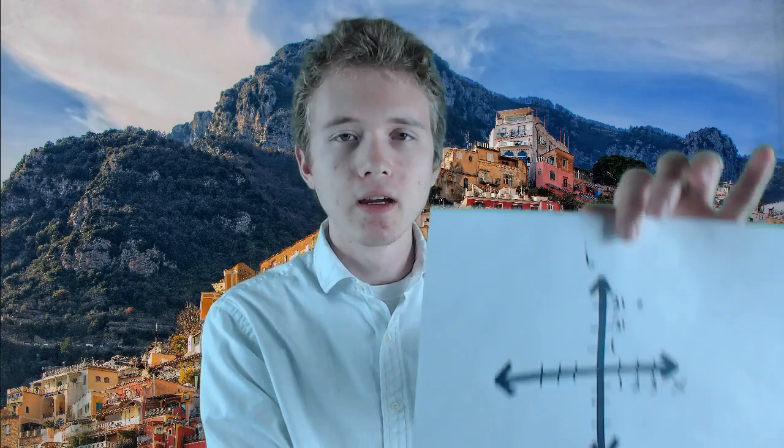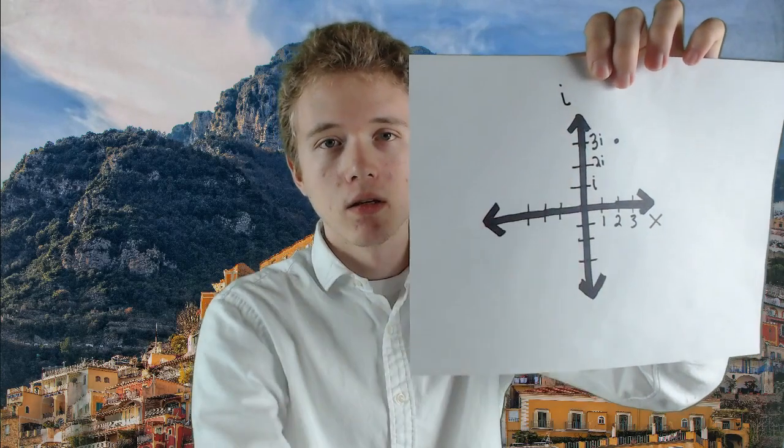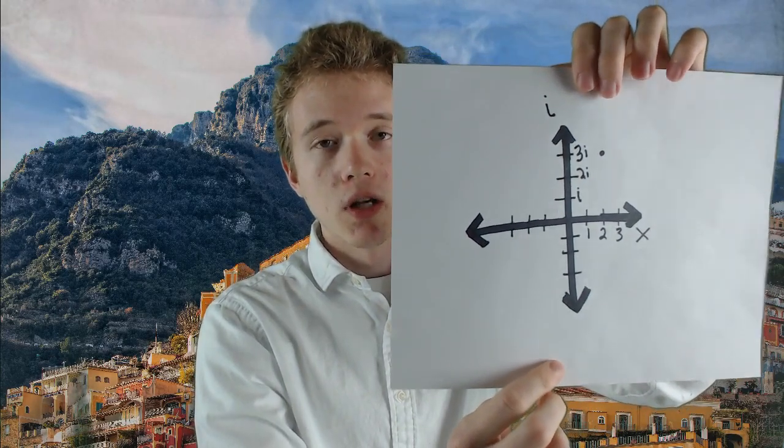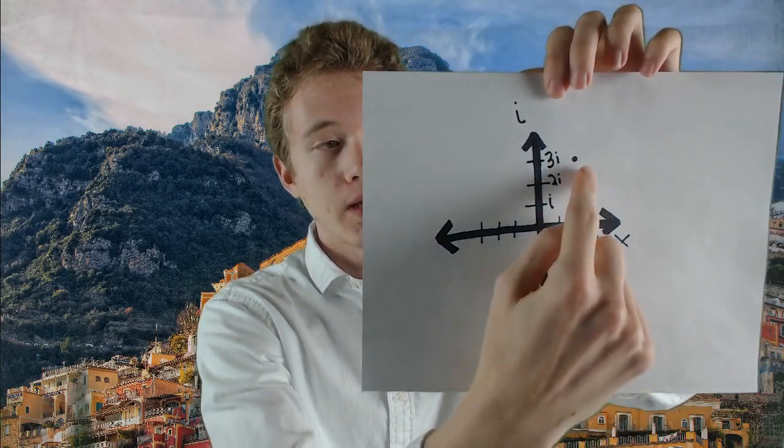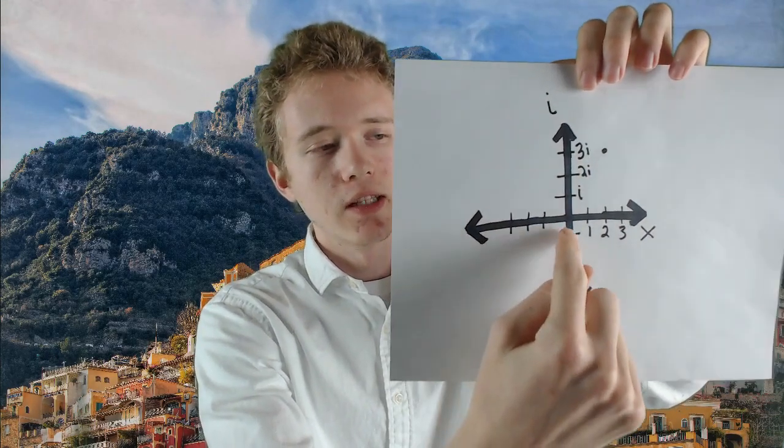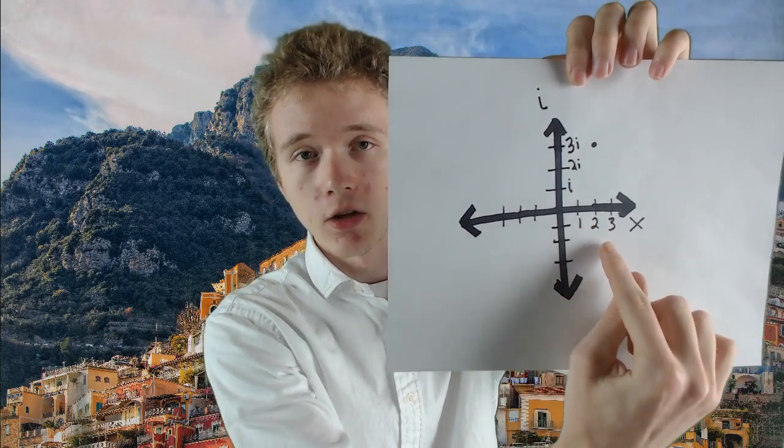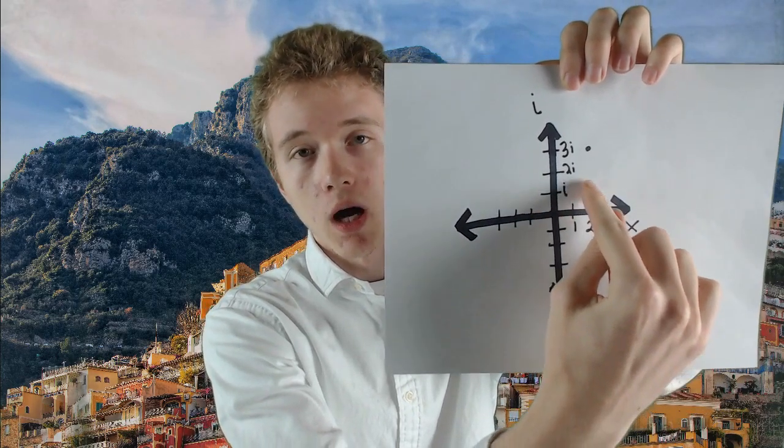Instead of a line, which is one dimensional, we can look at a graph, which has two intersecting axes. If we want to find this point, or plot it, all we have to do is go over 2, rotate by 90 degrees, and go up 3.